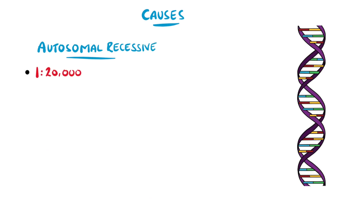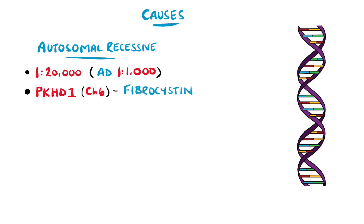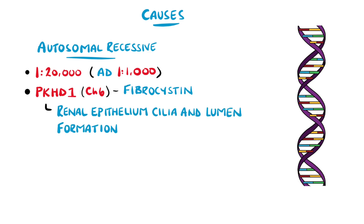The other type is autosomal recessive, which is significantly rarer than autosomal dominant. It often involves PKHD1 on chromosome 6, which is a gene coding for fibrocystin, a protein involved with the generation of cilia in renal epithelial cells, and has a role in forming the lumen of the tubule. It is estimated that mortality is around 30% in newborns with this version.